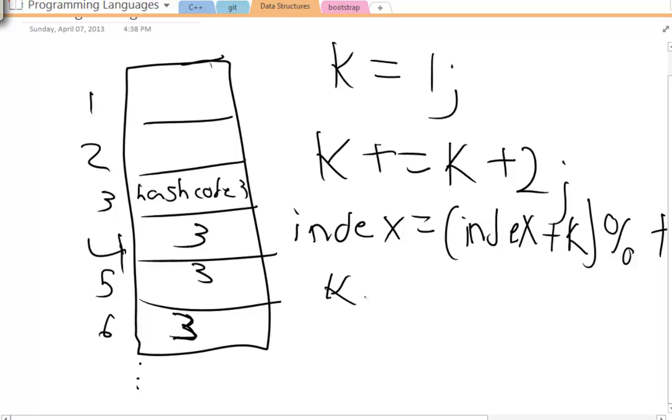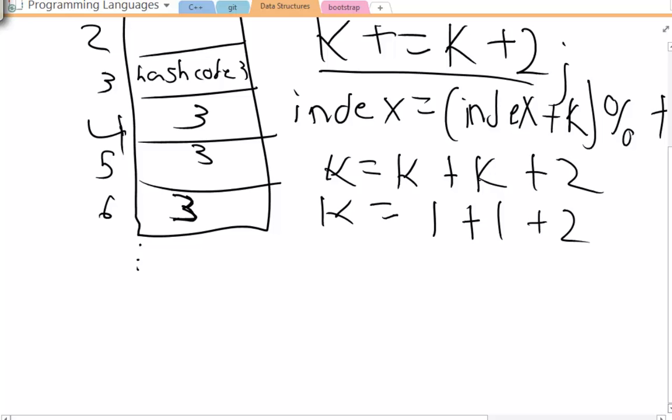it will be k is equal to, since k is now 1, k is equal to k, which is equal to k plus k plus 2 is what basically this evaluation ends up being. So I can say k is equal to 1 plus 1 plus 2. So k is now equal to 4. Instead of incrementing it, it will just be 2. And then the next operation,